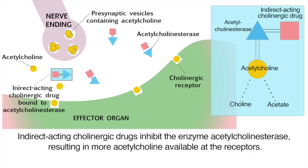Indirect acting cholinergic drugs for Alzheimer's disease are widely distributed, including to the central nervous system, thus improving cholinergic neurotransmission in the brain.